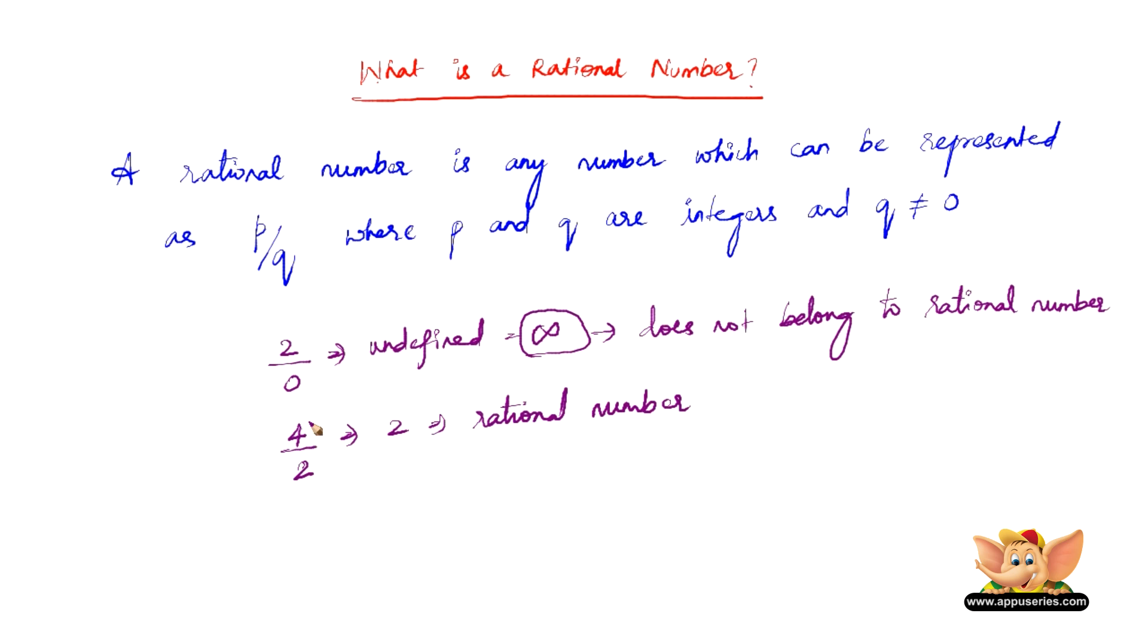As long as you can represent two numbers in the form of P by Q and Q is not 0, then that can be called a rational number.